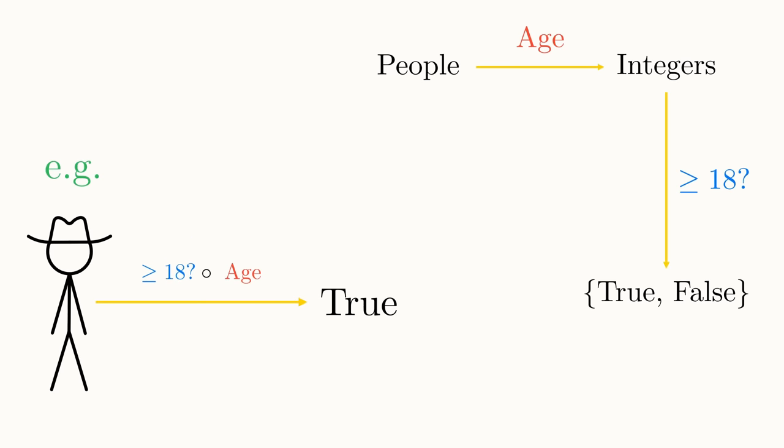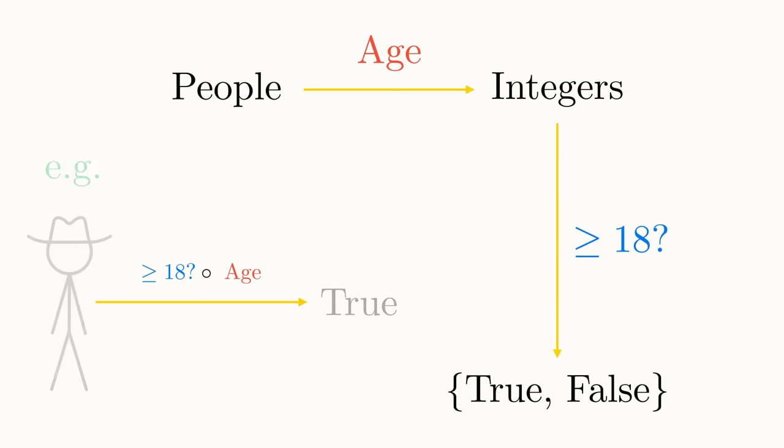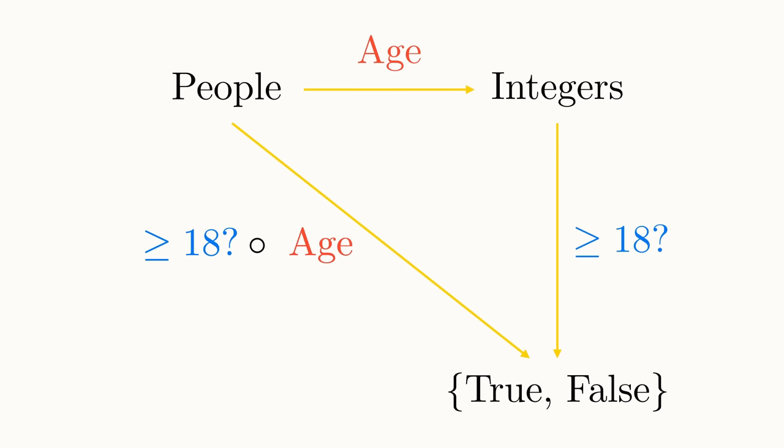The order of the functions can cause confusion, but reading the circle as follows can help. So this function would read as greater than or equal to 18 follows age. Since this new function maps from a person to either true or false, we can add this to our diagram as a diagonal arrow, acting as a shortcut from the set people straight to the set of truth values.